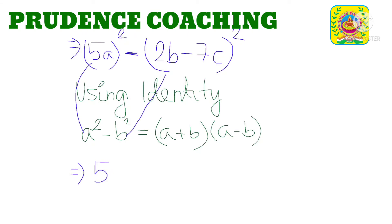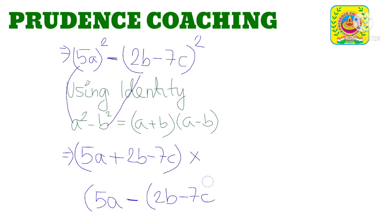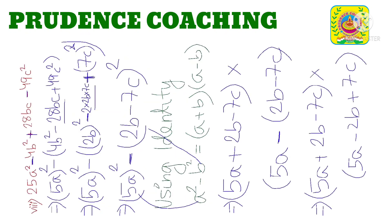So first we will write a plus b, that is 5a, plus b which is 2b minus 7c, multiplied by a minus b, that is 5a minus 2b minus 7c. So this is our final answer. Thank you.